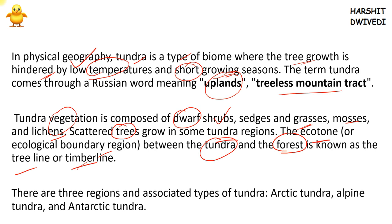The treeline and timberline are very important for deciding whether a particular place is tundra or not. Basically, three types of tundra regions have been identified: one is arctic tundra, second is antarctic tundra, and third is alpine tundra. Arctic tundra is very simple — the northernmost regions near the North Pole form the arctic tundra.